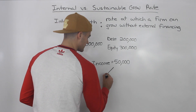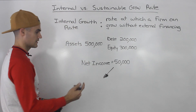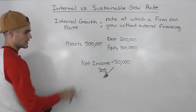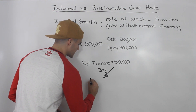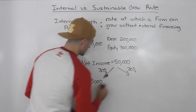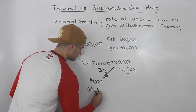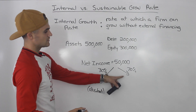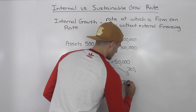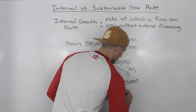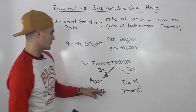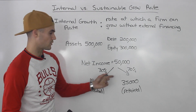Now out of this $50,000, let's assume that 30% is the payout ratio — so 30% of the net income is being paid out as dividends. 30% of $50,000 gives us $15,000 in dividends. That means 70% of that net income is going to be retained in the company: 70% of $50,000 gives us $35,000 retained. The dividends and the retained earnings both add up to $50,000.